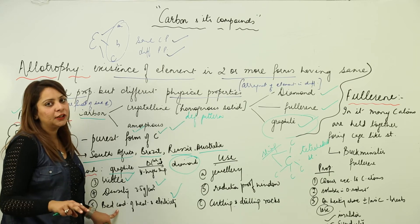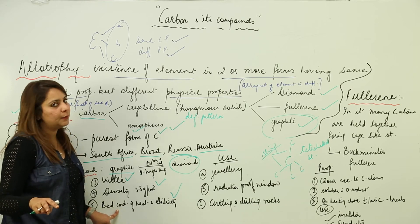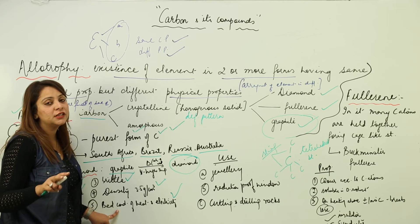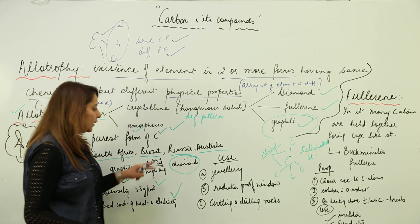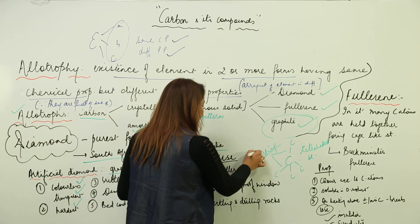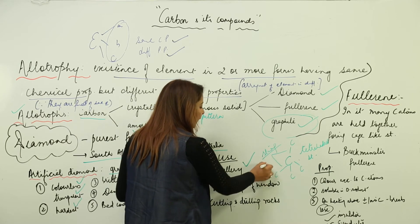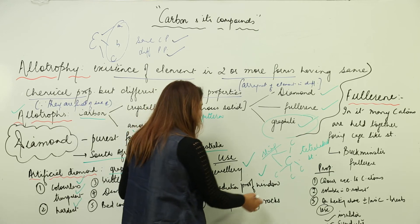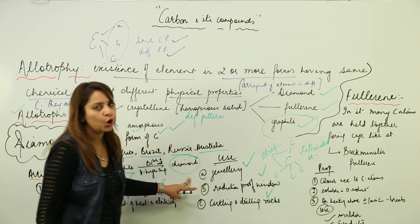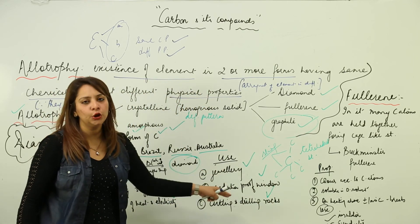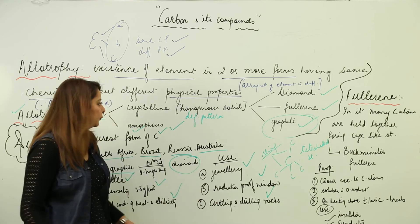You can see they differ in physical properties. Allotropes have the same chemical properties but different physical properties due to differences in arrangement. What are the uses? Basically, use in making jewelry, use in making radiation-proof windows in space satellites, and use for cutting and drilling rocks.